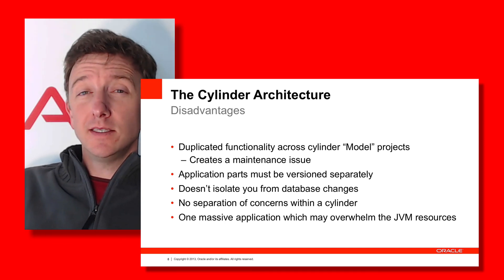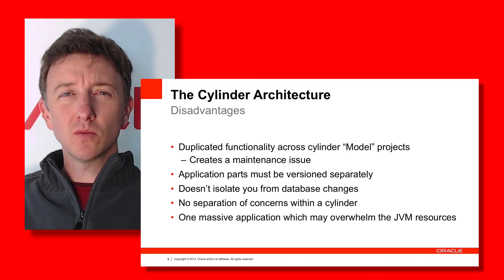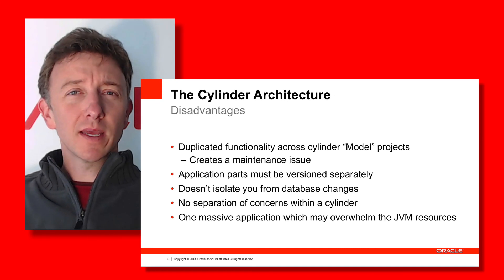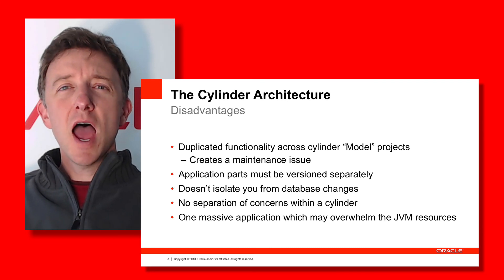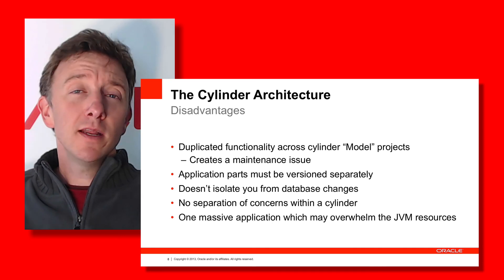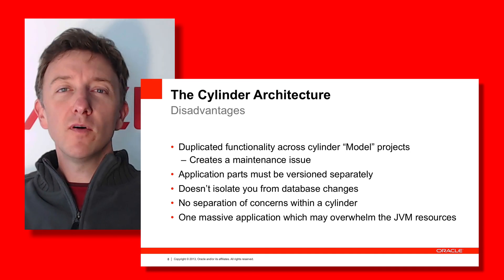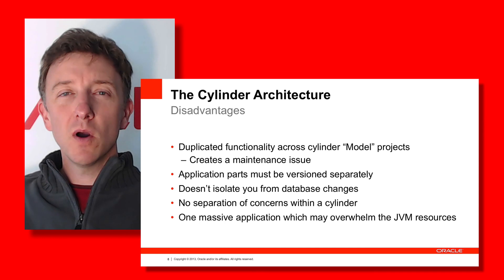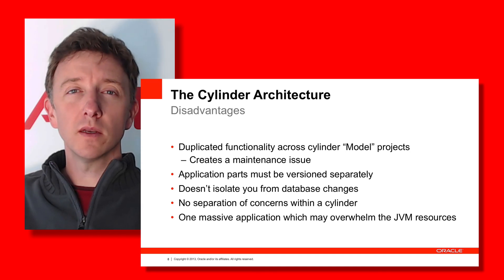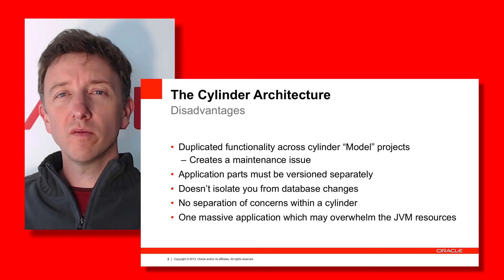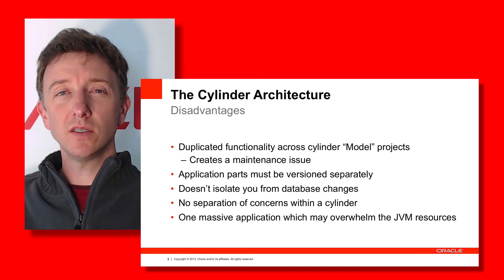Another potential problem is that with multiple cylinders all constituted into a master workspace, at certain points different parts of the application will need improvements or bug fixes over the lifetime of the application. That means particular cylinders may need to be versioned separately from the others. There may not necessarily be a version one or version seven of all your cylinders — you might have Cylinder A at version three, Cylinder B at version seven, Cylinder C at version one. You're going to have to keep track of all of that, and there's no magical mechanism in JDeveloper or tooling to assist you.